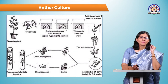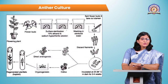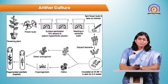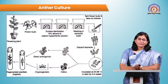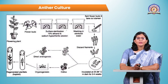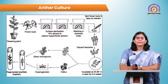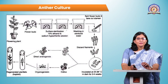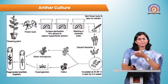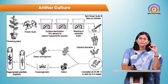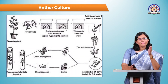Here the diagram shows the anther culture protocol. A healthy mother plant is selected first, then unopened floral buds are collected, washed, and surface sterilized using sodium hypochlorite and 70% ethanol. After splitting the flower bud and taking the anther, the filament portion must be removed and only anthers at the critical stage are selected.